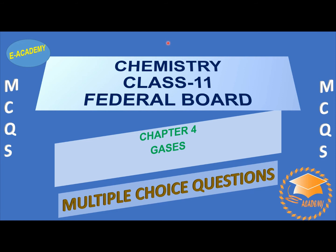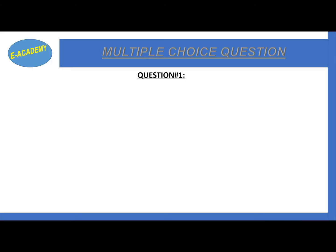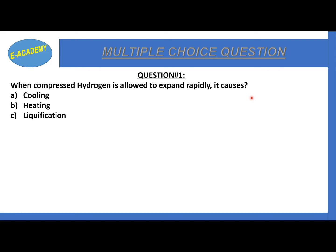Bismillahirrahmanirrahim. Assalamu alaikum students, I hope everyone will be fine. Today we will discuss Chemistry Class 11 Federal Board Chapter 4 - Gases MCQs. MCQ number 1: when compressed hydrogen is allowed to expand rapidly, it causes cooling, heating, liquefaction, or solidification?